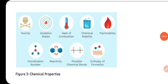Yahan par aap dekh sakte hain chemical properties — toxicity, oxidation states, heat of combustion, chemical stability, flammability, coordination number, reactivity, possible chemical bonds, enthalpy of formation. Toh yeh sari kisi bhi substance ki chemical properties mein include hoti hai.